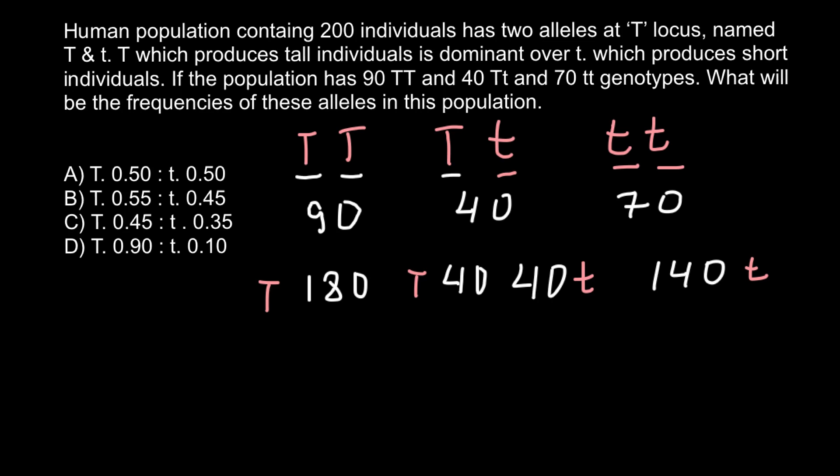And these 70 individuals would have 140 recessive alleles t. So basically we just doubled these numbers and these individuals here have half of the alleles that is dominant allele T and half of the alleles that is recessive t. So this is how we got all these numbers.